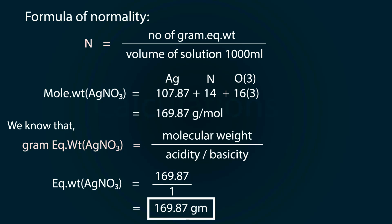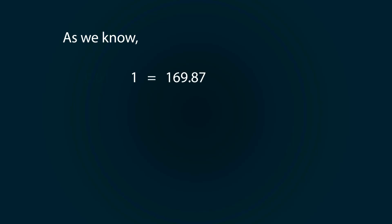We get our value as 169.87 grams as we know that 1 normal silver nitrate is equal to 169.87. So if you want to find 0.01 normal, we have to multiply it by 0.01 and we get our value as 1.6987.